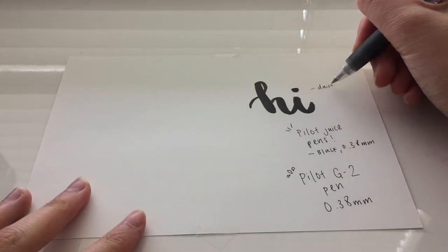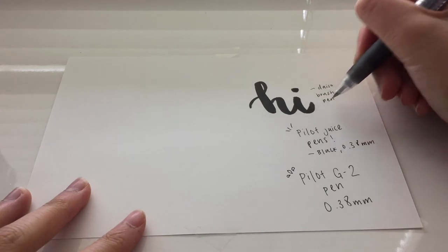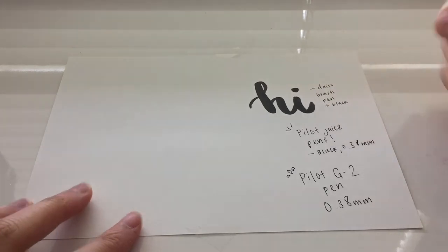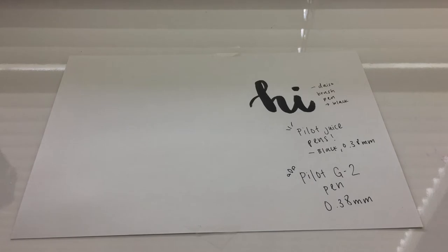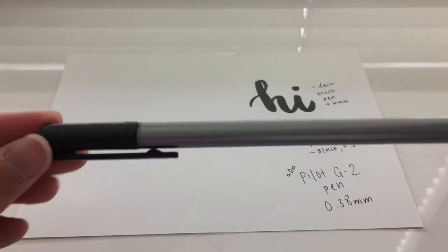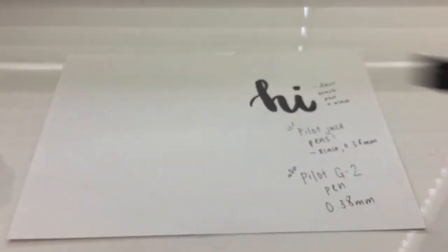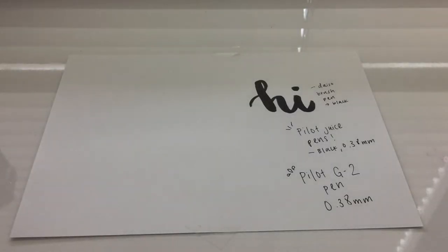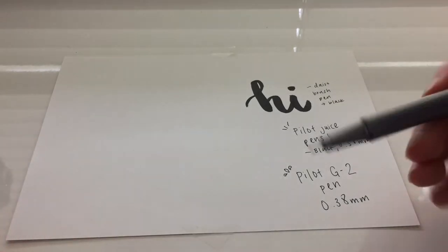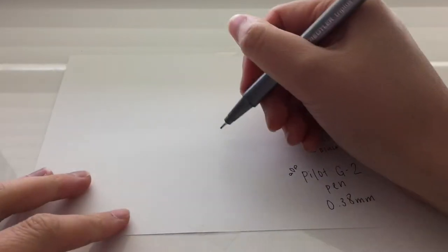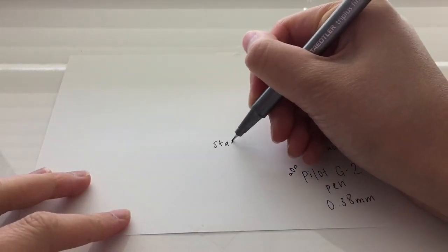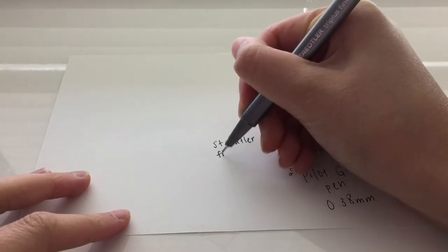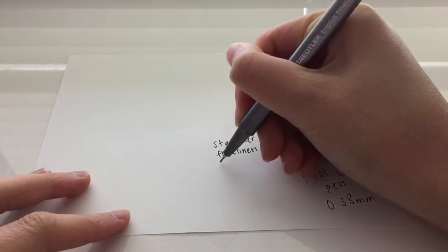Next are the fineliner pens. They have a marker felt tip similar to the Sharpie fine tip pen. I usually use this to write letters, not really notes because I like gel pens more because they're more flowing.